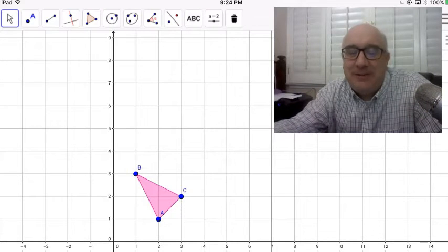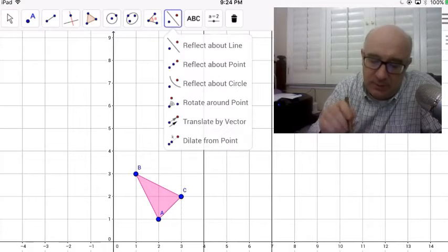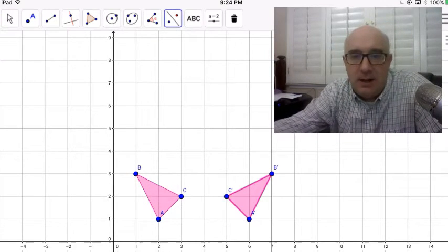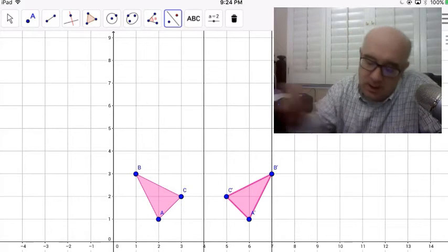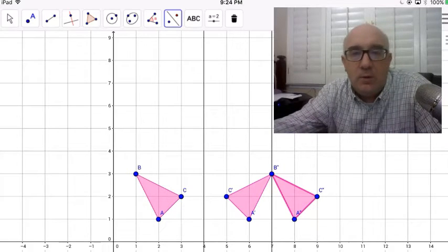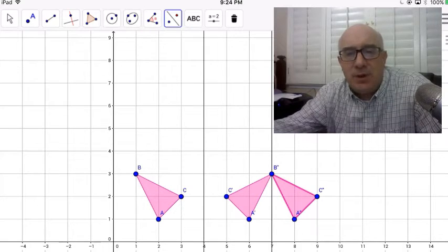Alright, let's take a look at a double reflection over parallel lines. So we've got triangle ABC and we're going to reflect it about our line x equals 4, and then we will take that figure and reflect it over the x equals 7 line and we get a result.